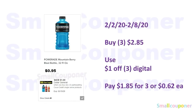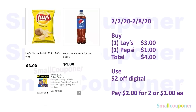The Powerade is $0.95 each at my store. Buy three for $2.85, use the $1 off 3 digital — this digital appeared on my account today, Monday — and pay $1.85 for three or $0.62 each. For the Lay's chips, the 8 ounces is $3.00, and one Pepsi 1.25-liter is $1.00, so your total comes to $4.00. Use the $2 off digital and pay $2.00 for both or $1.00 each.